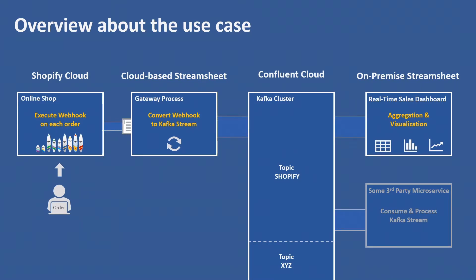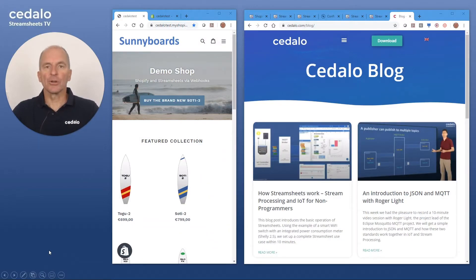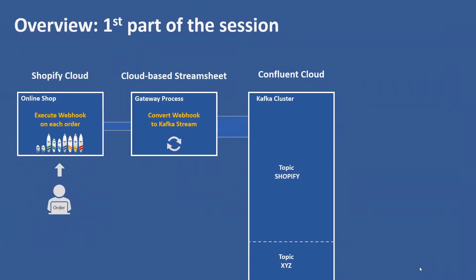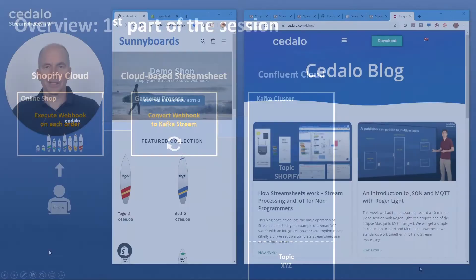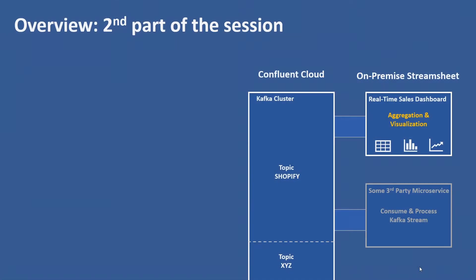Our final goal is to build a dashboard where we can see the sales data in real time as it happens in Shopify. In this first part, I show you how to connect Shopify with Kafka using a StreamSheet that resides in the cloud and works as a gateway between Shopify and Kafka. In a later session, I will show you how we retrieve data from Kafka onto a locally hosted StreamSheet where we then build the dashboard.